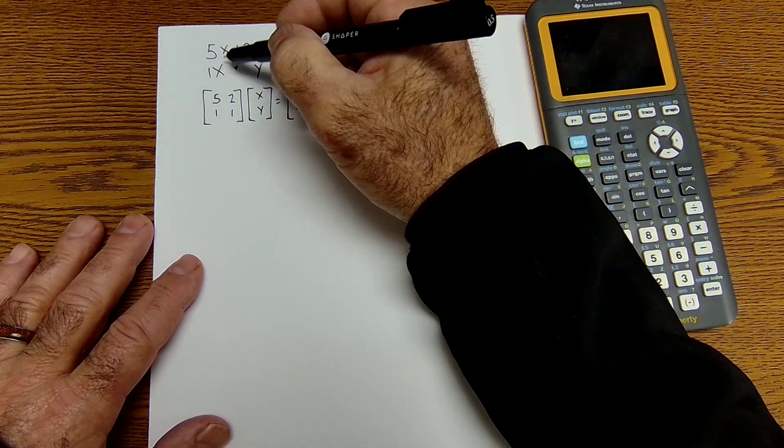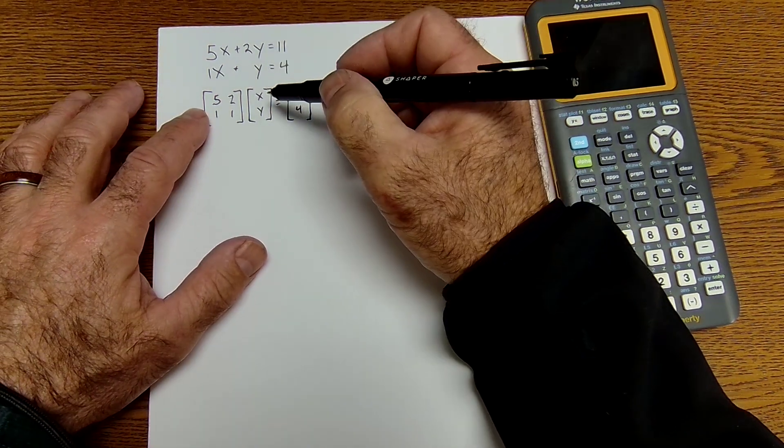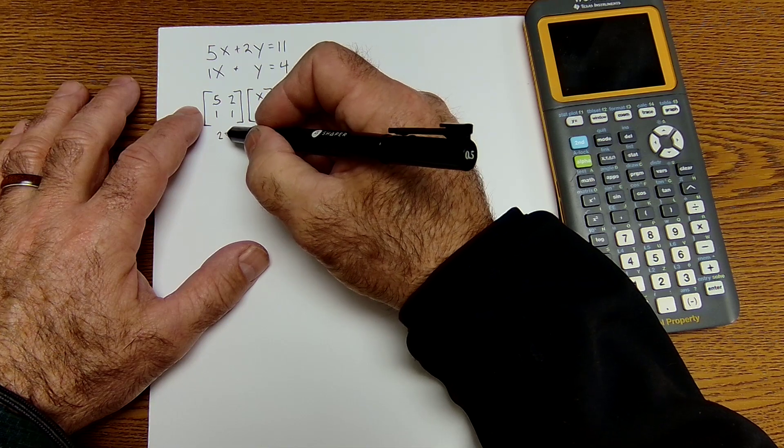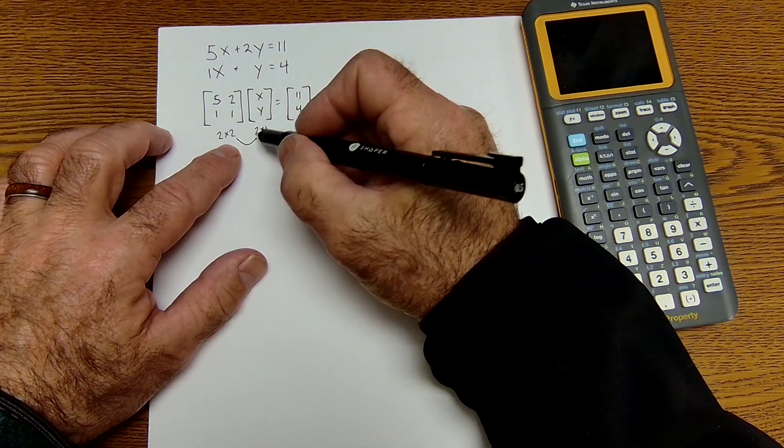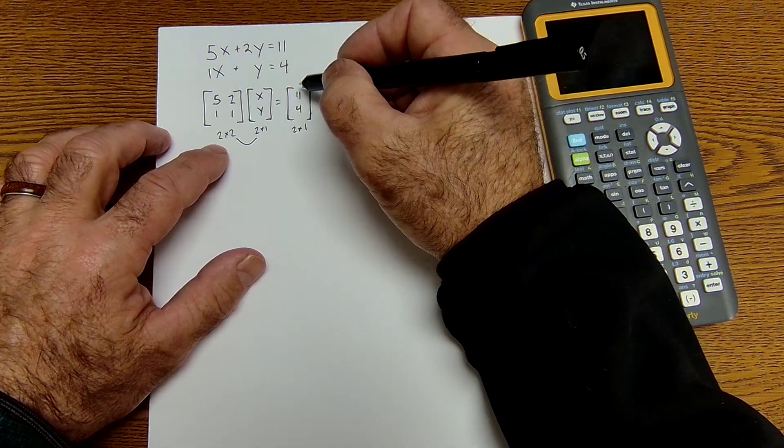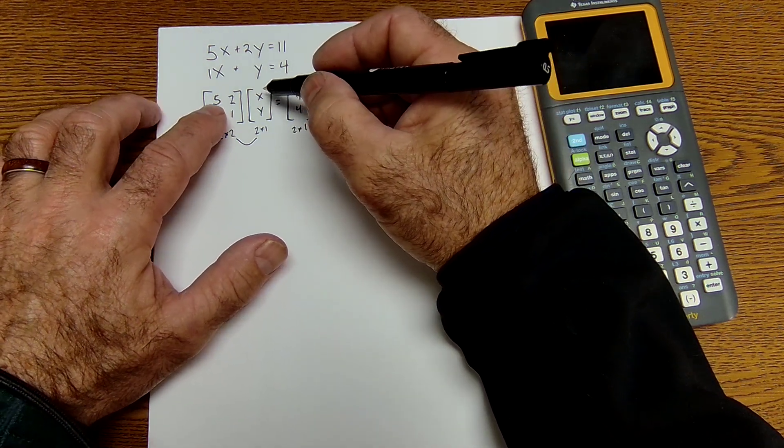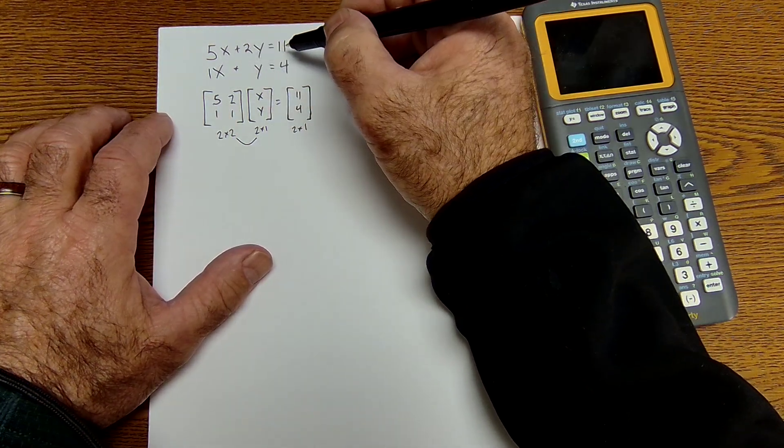First thing is these X's have to line up, these Y's, and then these solutions. And you can see as I multiply this 2 by 2 times the 2 by 1, yes, I can multiply them. The result's the 2 by 1. This is first row, first column, so it would be 5X plus 2Y would equal 11, and I can see that's my equation there.